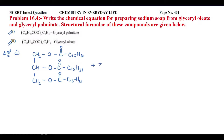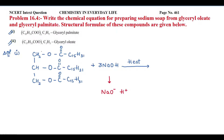We add sodium hydroxide (NaOH) to glyceryl palmitate to prepare sodium soap, and heat the solution. Sodium hydroxide dissociates into NaO⁻ and H⁺. The glyceryl palmitate is dissociated at the bond between the oxygen and the carbonyl group (C=O).